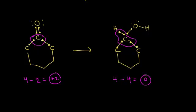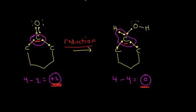We started with a +2 oxidation state, and that was reduced to zero — so this is a reduction reaction. You can think about reduction as a decrease in oxidation state, or as the carbon gaining electrons — it picked up two more. Yet another way: carbon lost a bond to oxygen (it had two bonds to oxygen on the left, only one on the right) and gained a bond to hydrogen. Increased bonds to hydrogen and decreased bonds to oxygen is another indicator of reduction, but assigning oxidation states is probably the best approach.